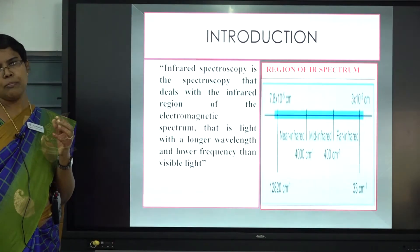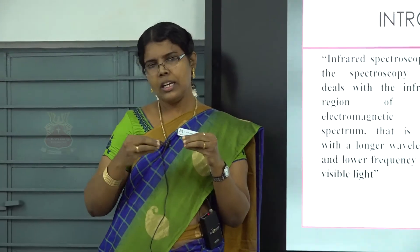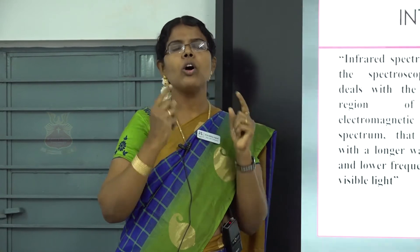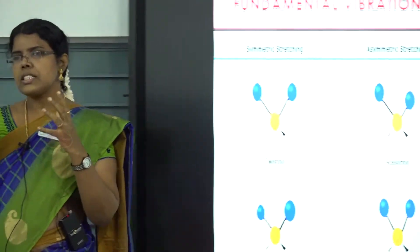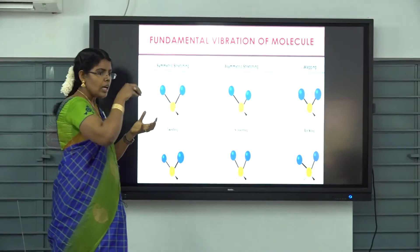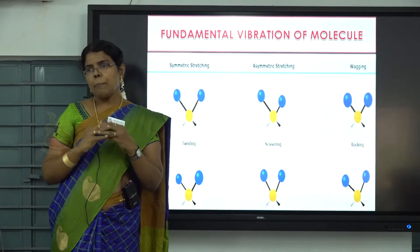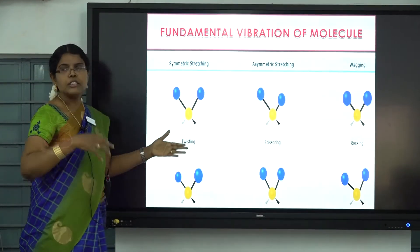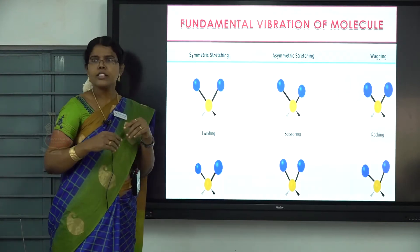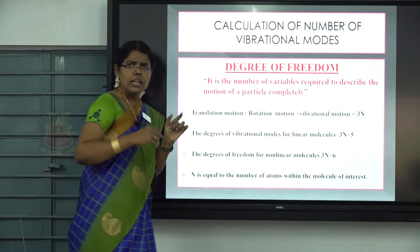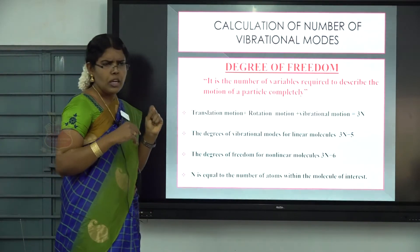When IR radiation causes a transition, the molecule can have rotational as well as vibrational motion. Here we are going to concentrate only on pure vibrational motion of a molecule. The different types of vibrational motion depend upon the number of atoms present in the molecule, including asymmetric stretching, wagging, rocking, twisting, scissoring, and so on.